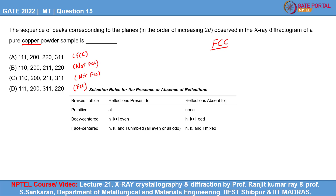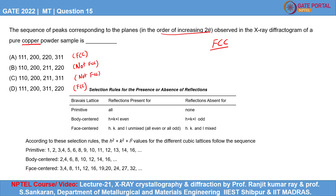Now we have to identify the correct sequence in order of increasing 2θ. The order of increasing 2θ for FCC follows the H²+K²+L² values: 3, 4, 8, 11, 12, 16.